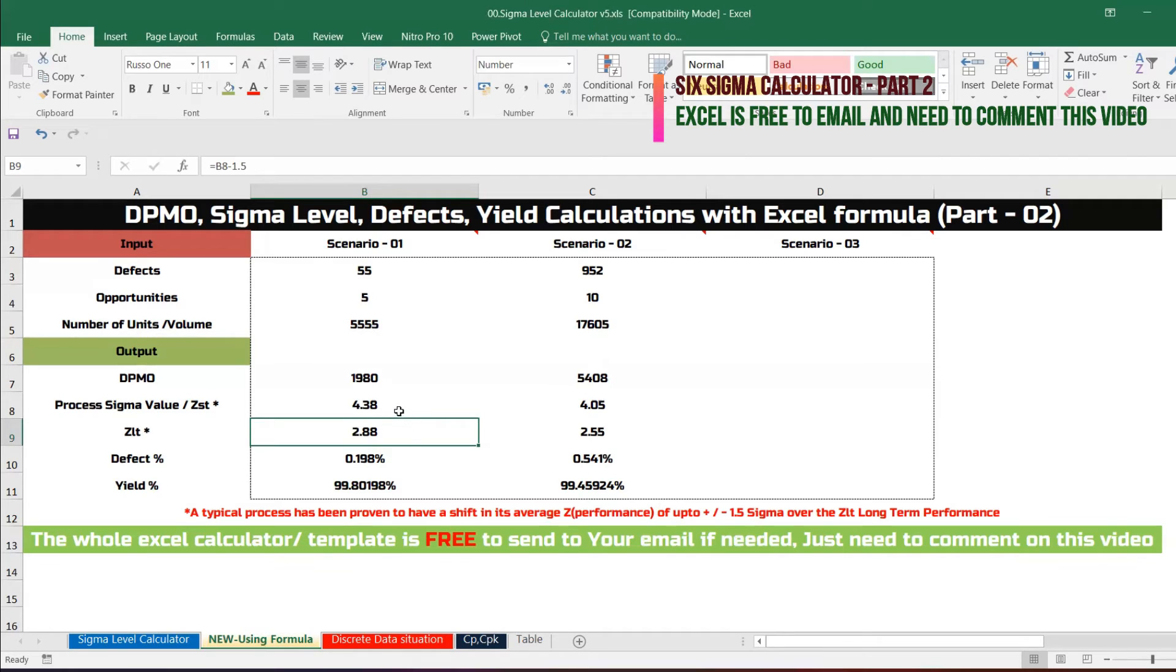Let's say yield you wanted to find out, very simple from the DPMO we can cross multiply. DPMO formula you all know, so defect we are talking about error divided by volume. Since we have already found out DPMO, we just need to divide 1 million.